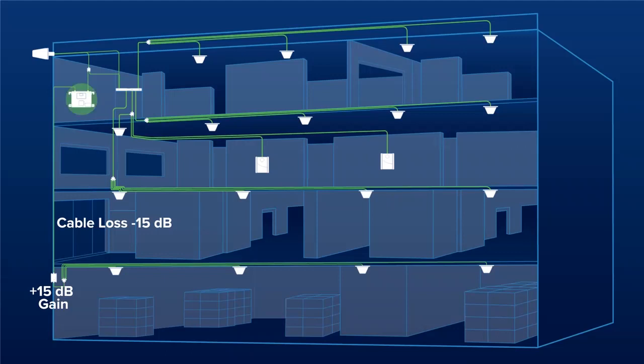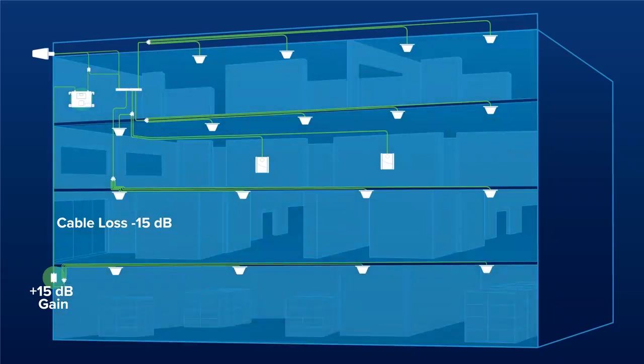The main amplifier will communicate to the inline how much output power it started with, and the inline unit will add power back into the system that was lost through the cable, up to 25 dB, to provide the same output power that the system began with, up to 15 dBm.